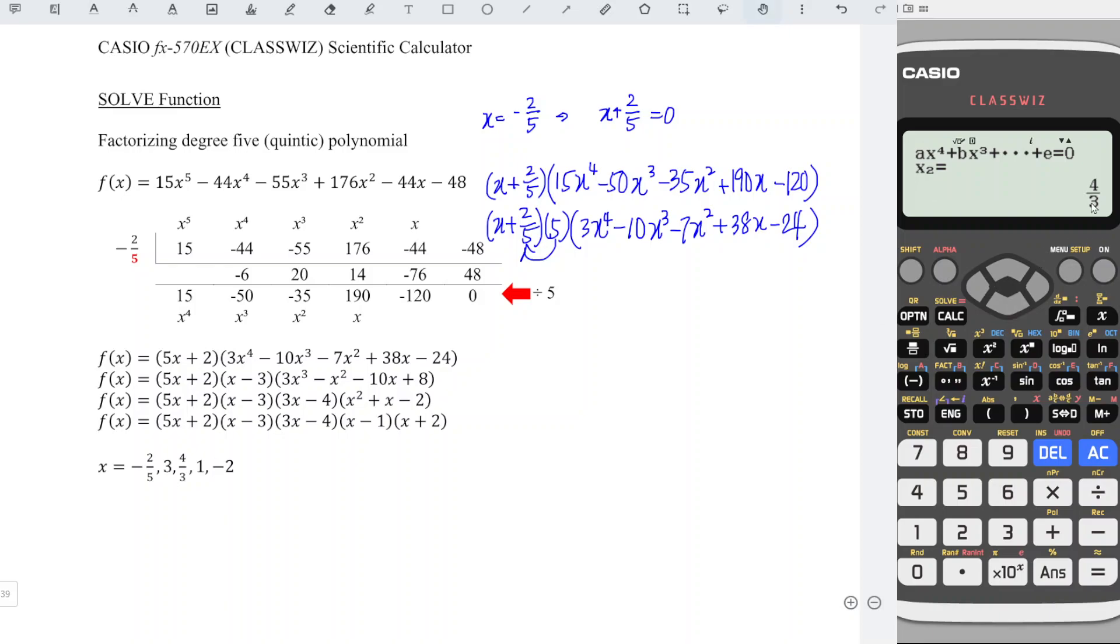Down, x2 equal to 4 over 3, down, x3 equal to 1, and x4 equal to negative 2.